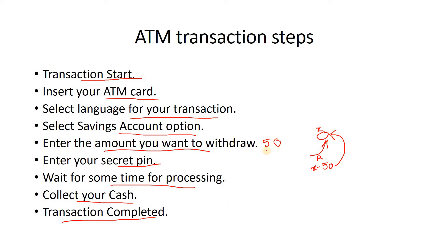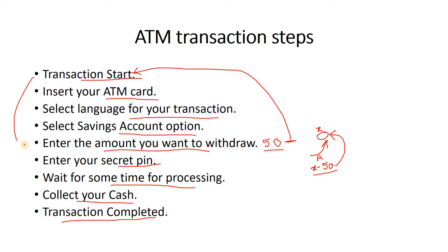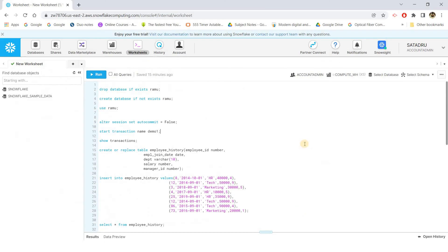Now consider a failure scenario: you requested withdrawal of 50 rupees, the system reads your balance X, computes X minus 50 in RAM, but due to some environmental issue it fails mid-way. The whole process will be rolled back to the first stage and you will have to redo the operation. If all steps are successful, a commit is made and the database is updated. That is the simple idea of commit and rollback. Let me now switch to the Snowflake console for the implementation.